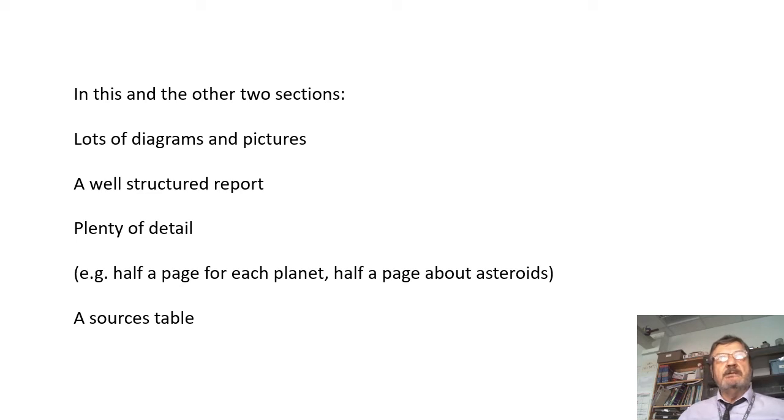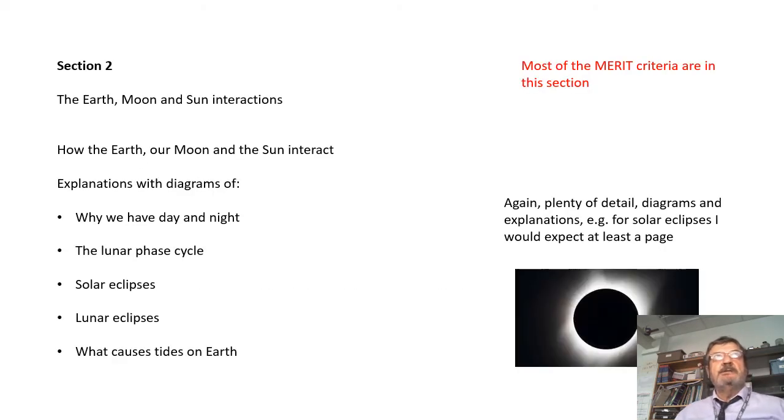Section 2 is about the interactions between the Earth and the Moon and the Sun. How the Earth and the Moon and the Sun interact with each other. Explanations with diagrams of why we have day and night, the lunar phase cycle. Explain why the moon looks different. The lunar phase cycle, solar eclipses, nice detail about those, lunar eclipses.